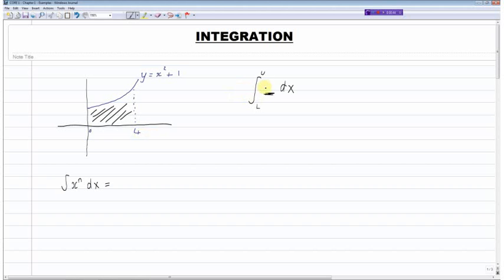The notation used for integration is like this, as noted here. The upper limit goes at the top of this integral, which looks like a vertically stretched S, and the lower limit goes at the bottom of this integral symbol. In this case the lower limit is 0, the upper limit is 4, and we put this dx here like so. The term that needs to be integrated would go in this space here.